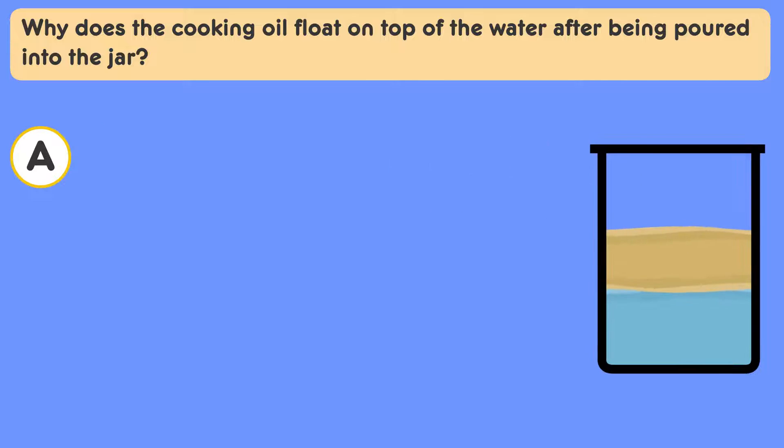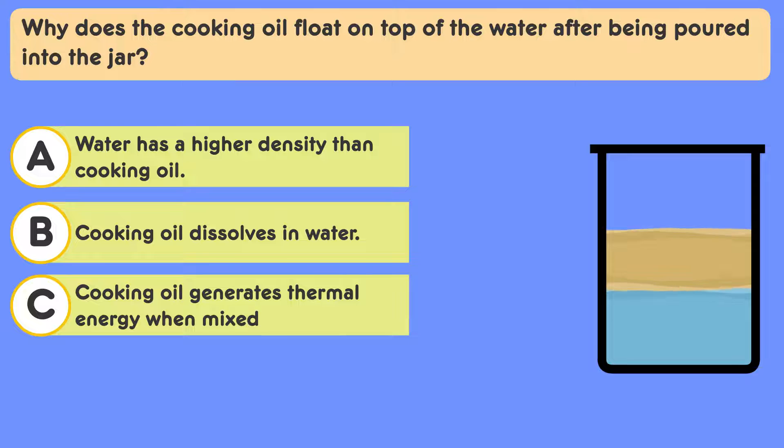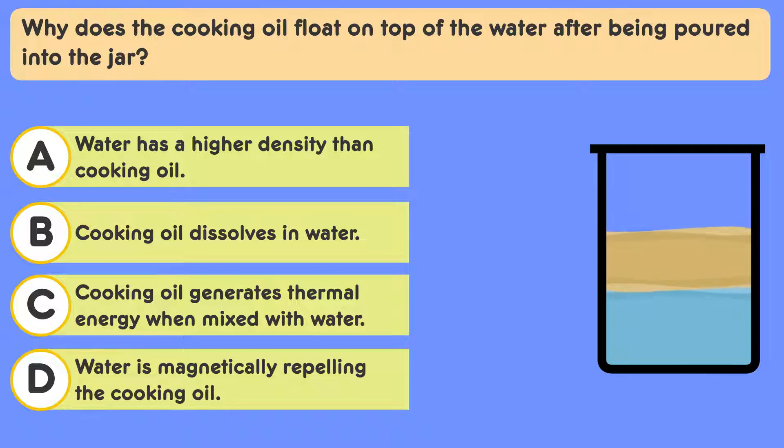Here are answer choices. A. Water has a higher density than cooking oil. B. Cooking oil dissolves in water. C. Cooking oil generates thermal energy when mixed with water. D. Water is magnetically repelling the cooking oil.